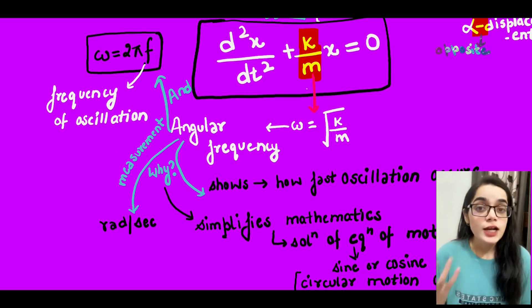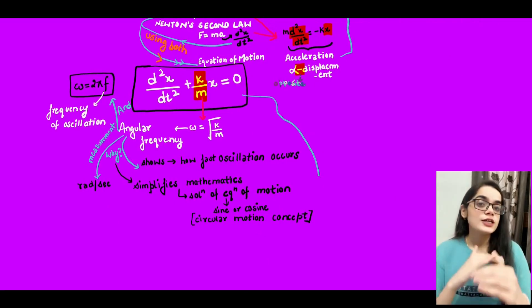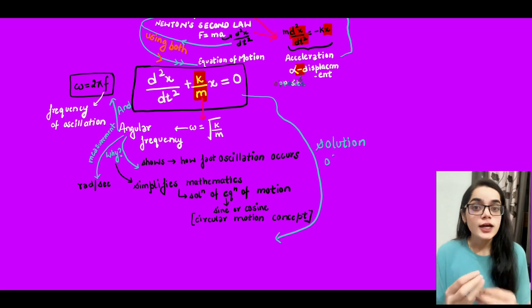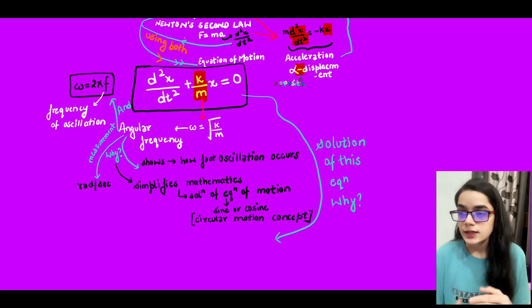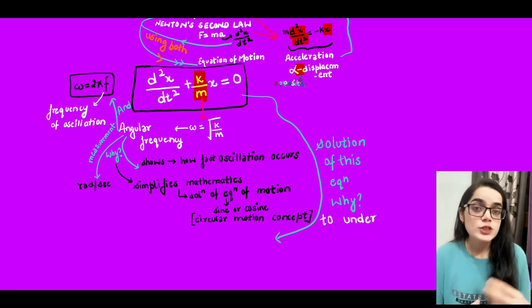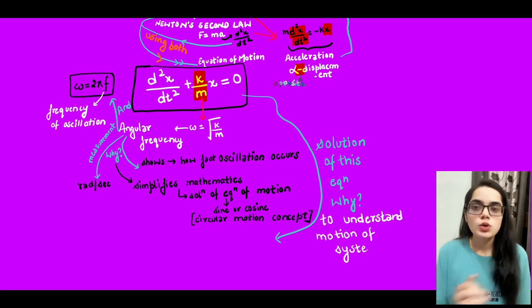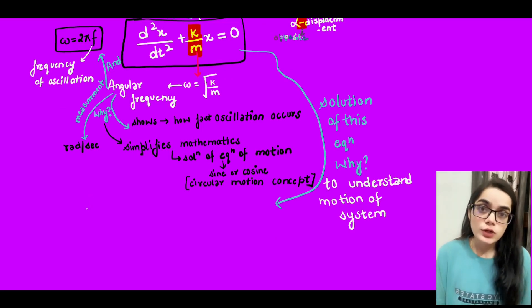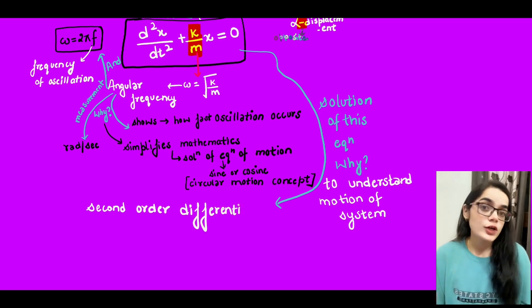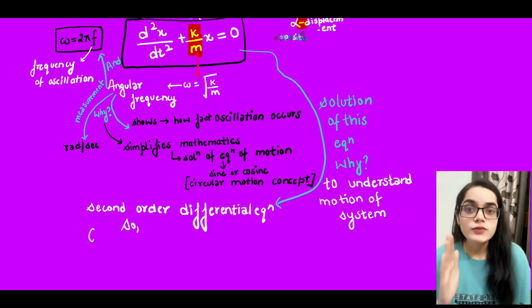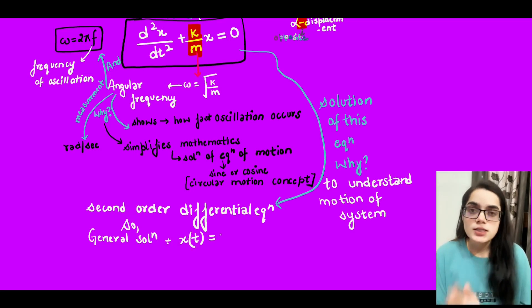The solution of the system helps us understand it. For this second-order differential equation, we get a general solution with a sine and a cosine function. Then we apply boundary conditions to find the values of constants A and B. After applying boundary conditions, we obtain x — the displacement as a function of time — which lets us draw a graph or determine displacement at any specific time.